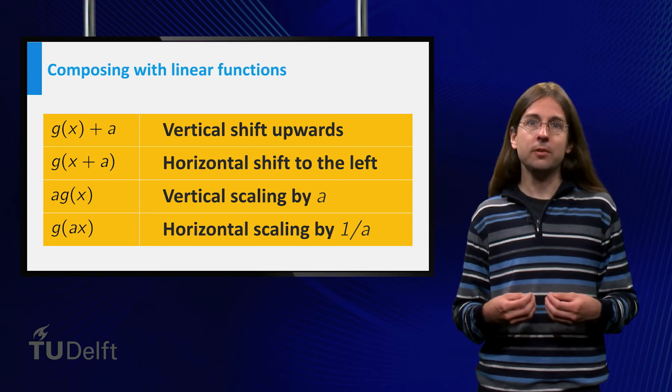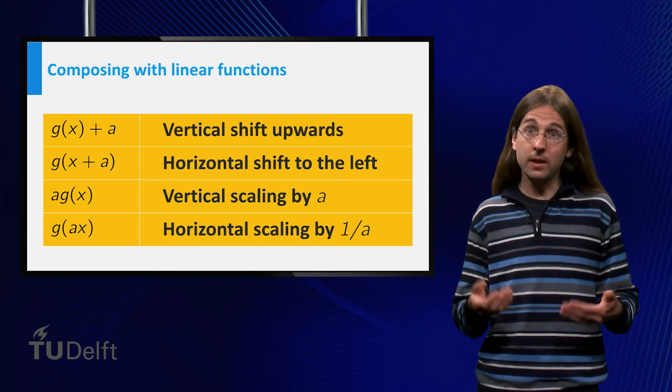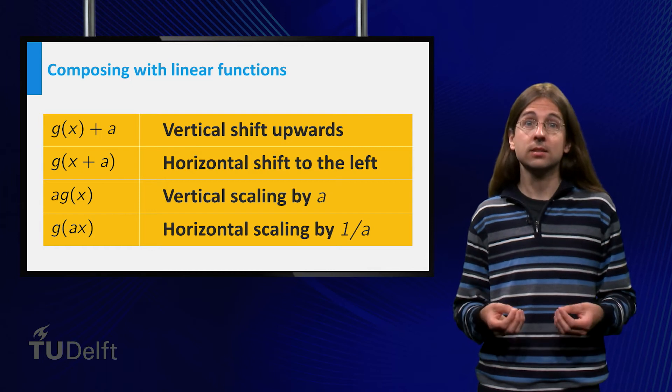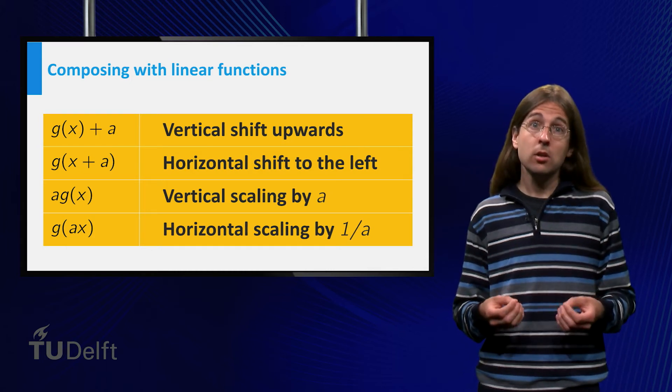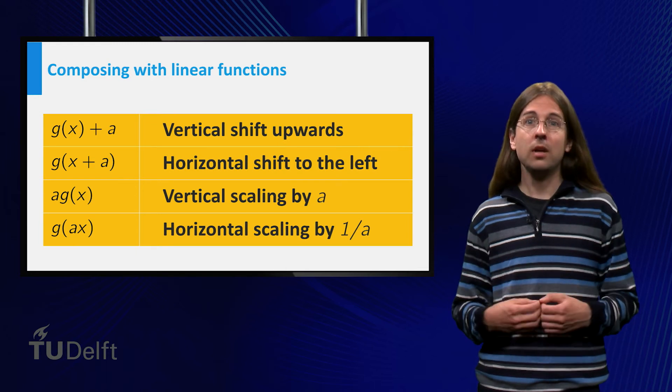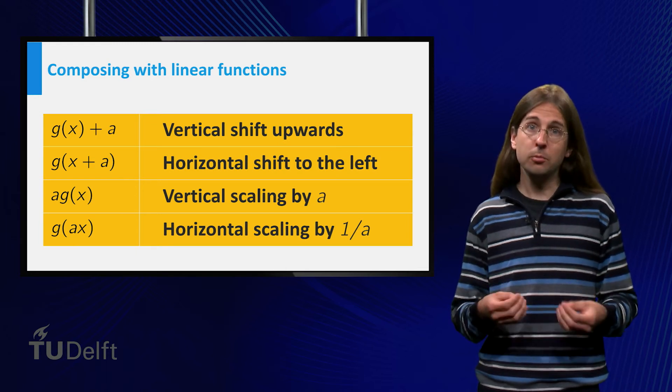a times g of x gives a vertical scaling by a factor a from the x-axis. g of ax gives a horizontal scaling by a factor 1 over a from the y-axis.